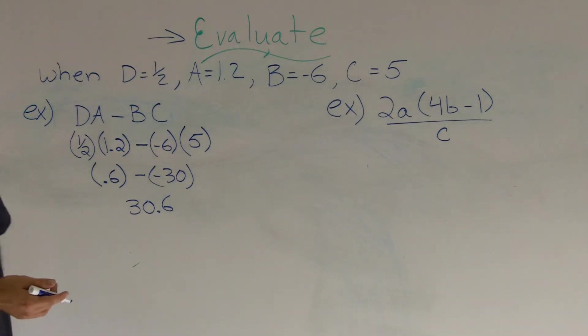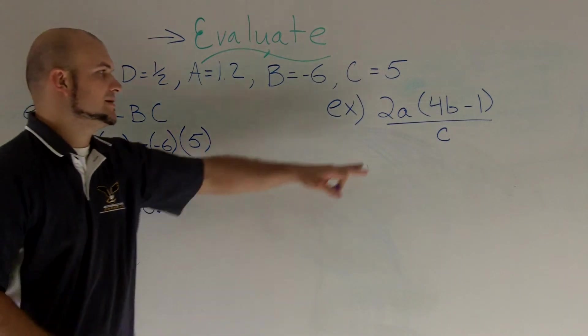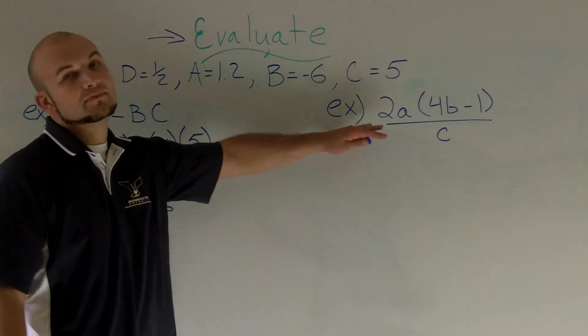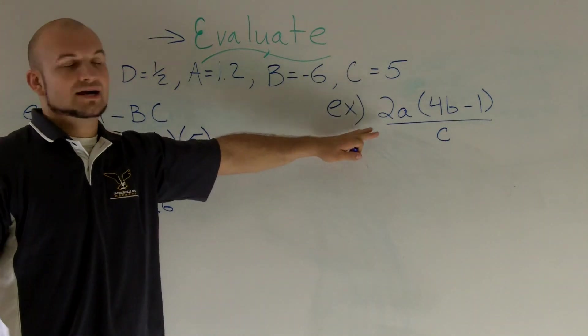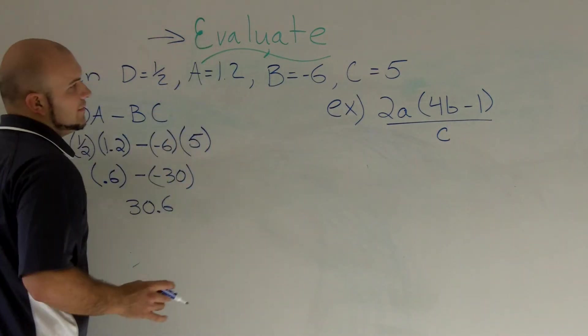All right. Now let's take a look at this second problem. The second problem is a rational expression. That means it has that nice little bar that's indicating we have a division part of the problem. A lot of people get mistaken or they get scared when they see a problem like this. Don't worry.